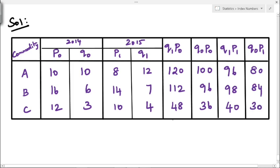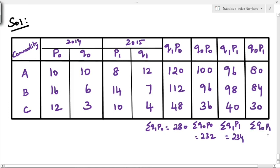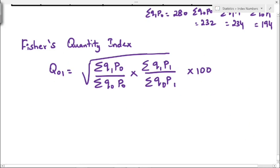Now we find the totals. Summation Q1P0 equals 280, summation Q0P0 equals 232, summation Q1P1 equals 234, and summation Q0P1 equals 194. We substitute all these values into Fischer's ideal quantity index formula: Q01 equal to square root of (summation Q1P0 divided by summation Q0P0) into (summation Q1P1 divided by summation Q0P1) into 100.